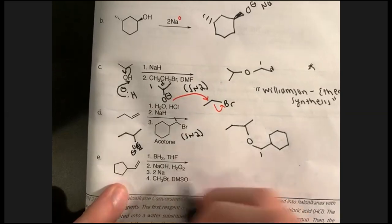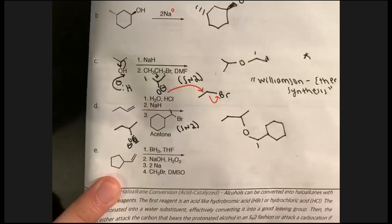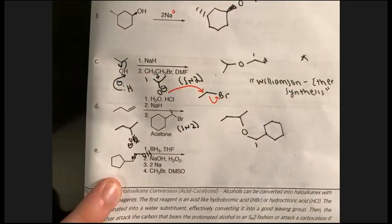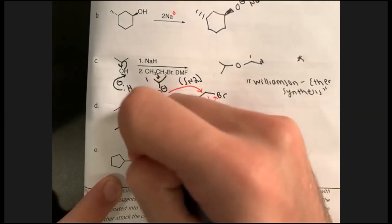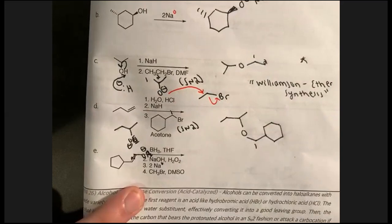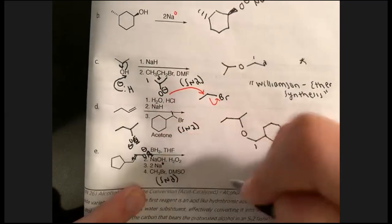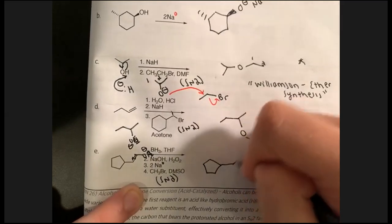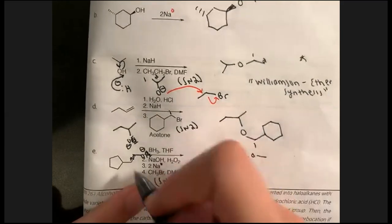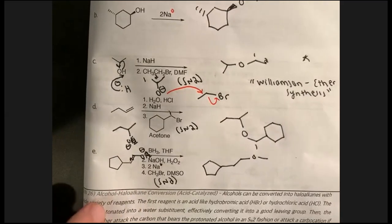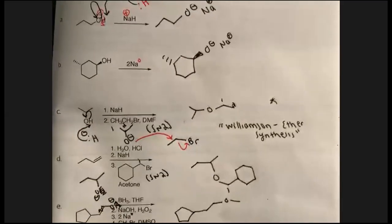Letter E: borane with sodium hydroxide — steps one and two — is hydroboration of the alkene to form the anti-Markovnikov alcohol at the less substituted position. Step three uses two equivalents of pure sodium metal to form the alkoxide anion again, and then methyl bromide undergoes another SN2 reaction. That's another example of Williamson Ether Synthesis. Any questions on forming alkoxide anions or Williamson Ether Synthesis?